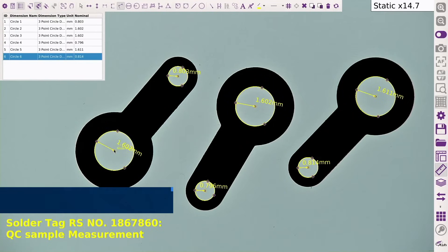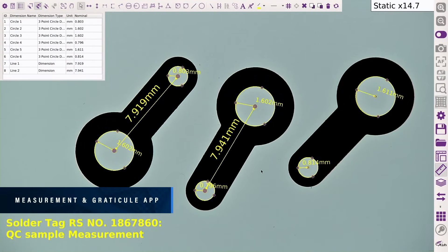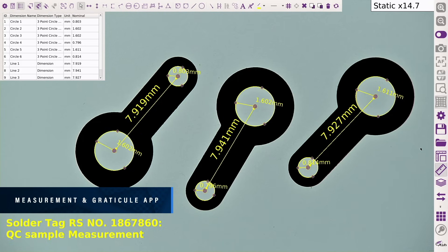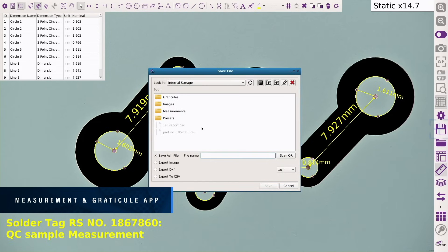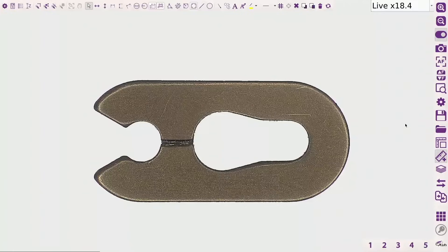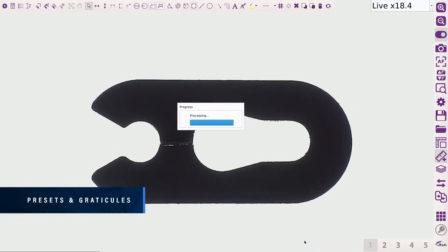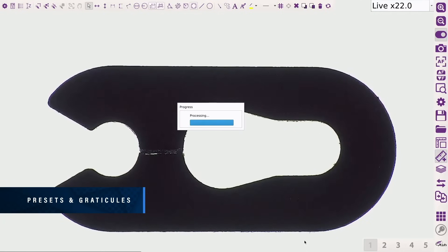Full suite of accurate measurement tools are available to efficiently carry out any measurement tasks. Annotations and graticules can be added to images for quick referencing. On-screen preset buttons allow quick access to pre-configured part-specific system settings.